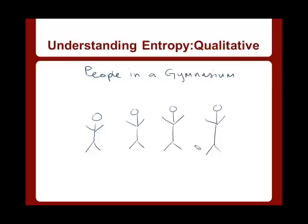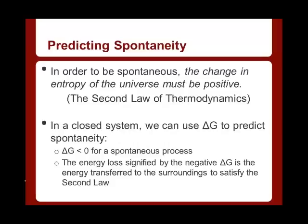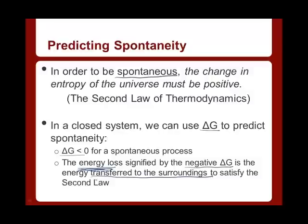Entropy is related to spontaneity because in order for a process to be spontaneous — to be favorable — the change in the entropy of the universe must be positive. So let's put these together. For a spontaneous process, the change in Gibbs free energy — the change in thermodynamic stability — is going to be a negative number. This signifies energy that's lost, transferred to the surroundings, which satisfies the second law of thermodynamics, and that's what makes the process spontaneous.